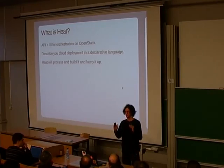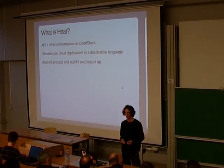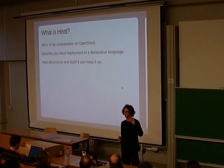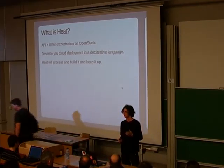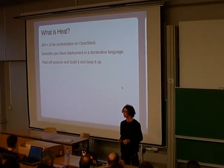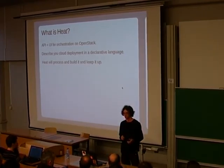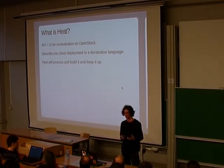The way it works is you write what we call a template, where using a declarative language you essentially describe the cloud deployment you want to have. You'd specify that you want these sorts of databases backed by EBS, these application servers with certain files, and all that. You describe that in a file, pass it to HEAT, and it will process it, launch everything, make sure all the dependencies are resolved and all the instances are provisioned. And optionally, you can have HEAT keep it up and monitor it.